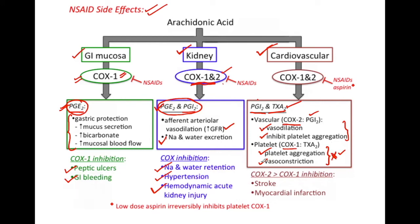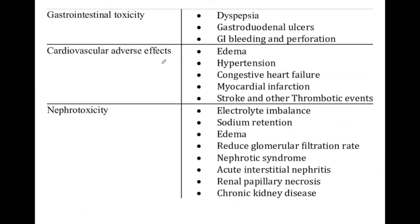So from this we can also see that COX-2 inhibitors have more chances of stroke and myocardial infarction. Now let's summarize the side effects of NSAIDs, which act by inhibiting the COX-1 and COX-2 enzymes, thereby inhibiting the production of prostaglandins.